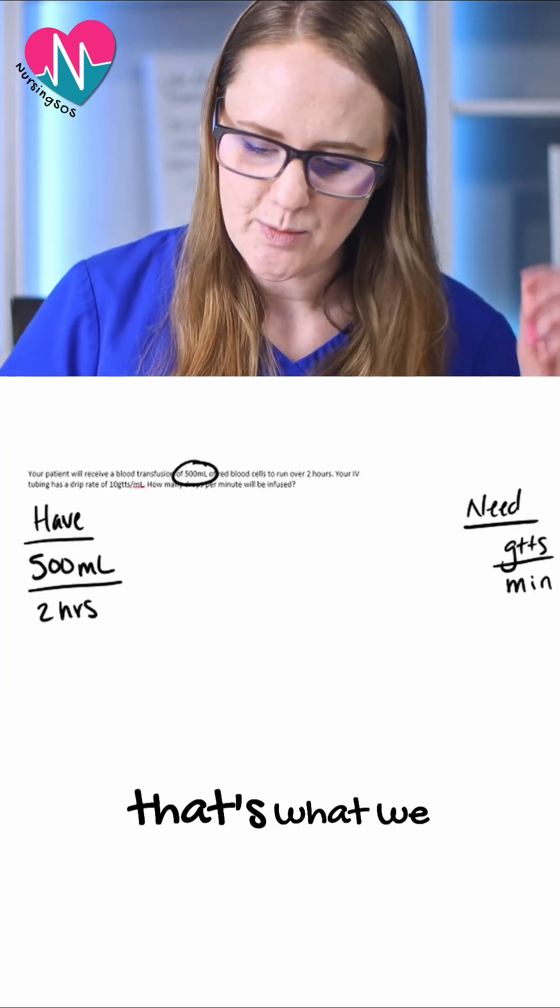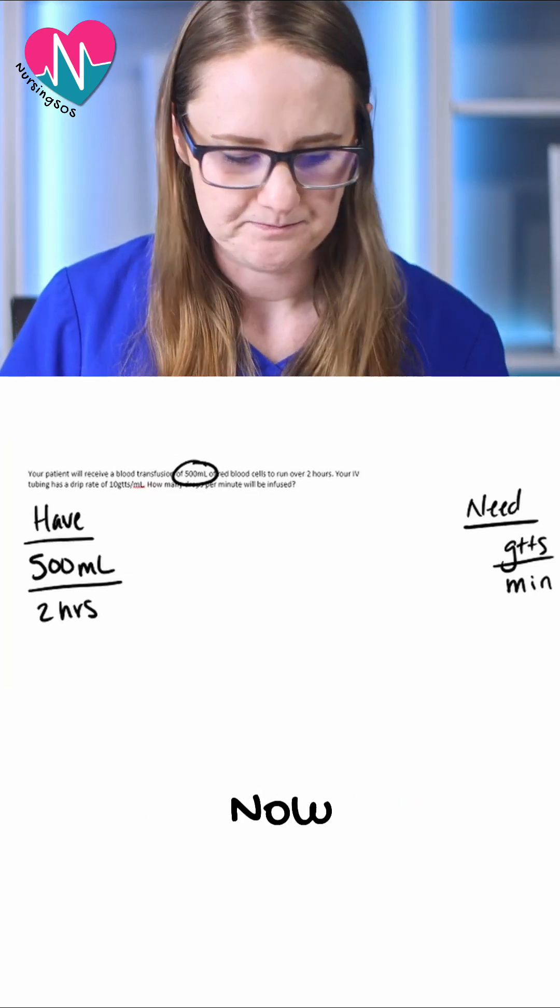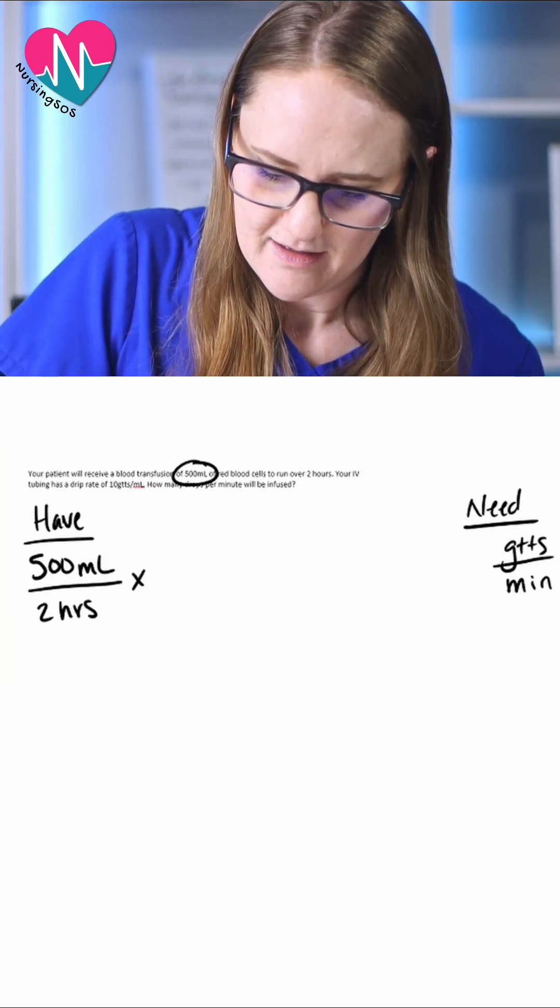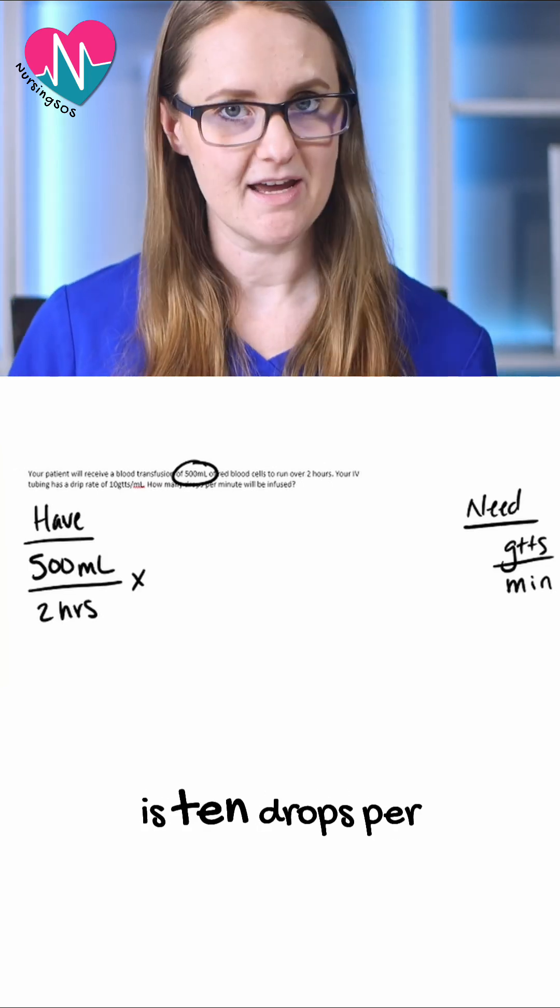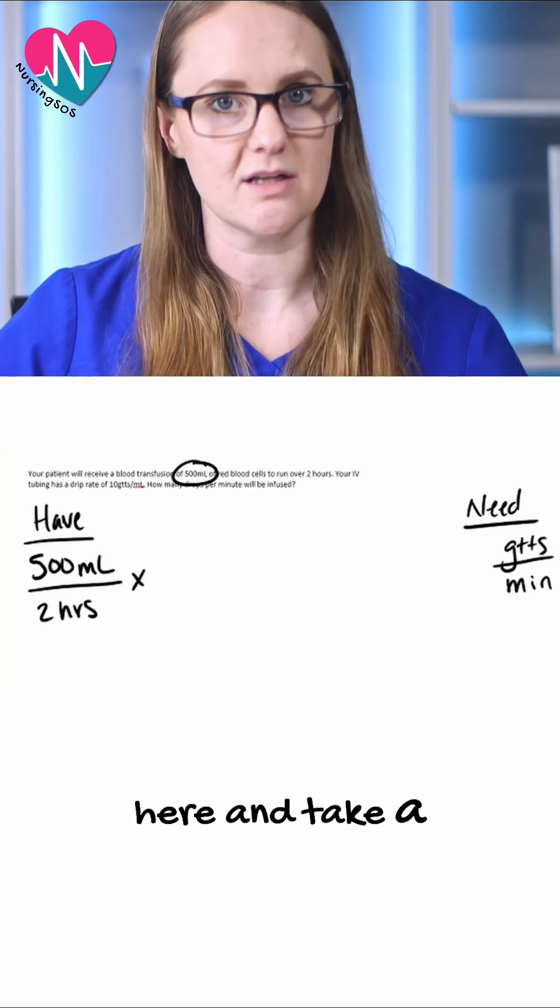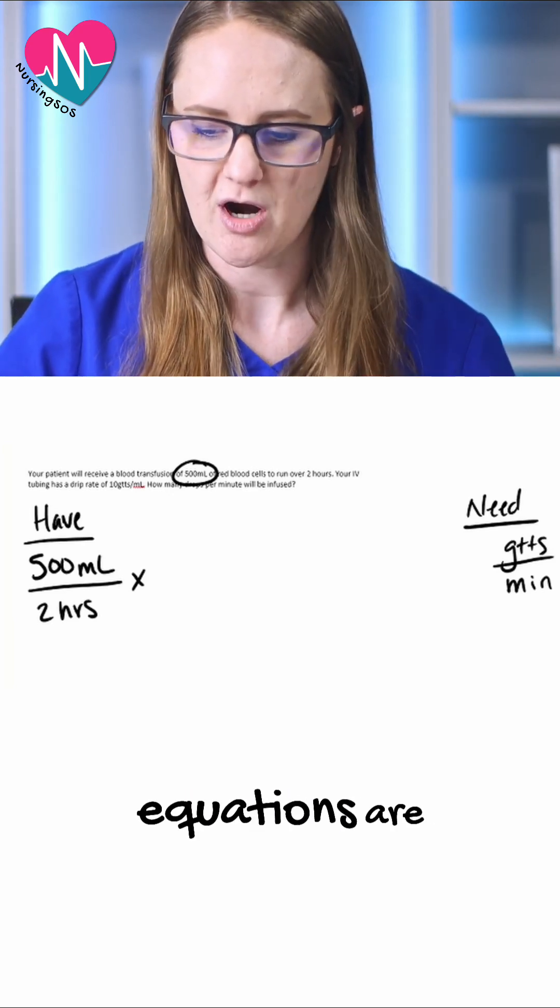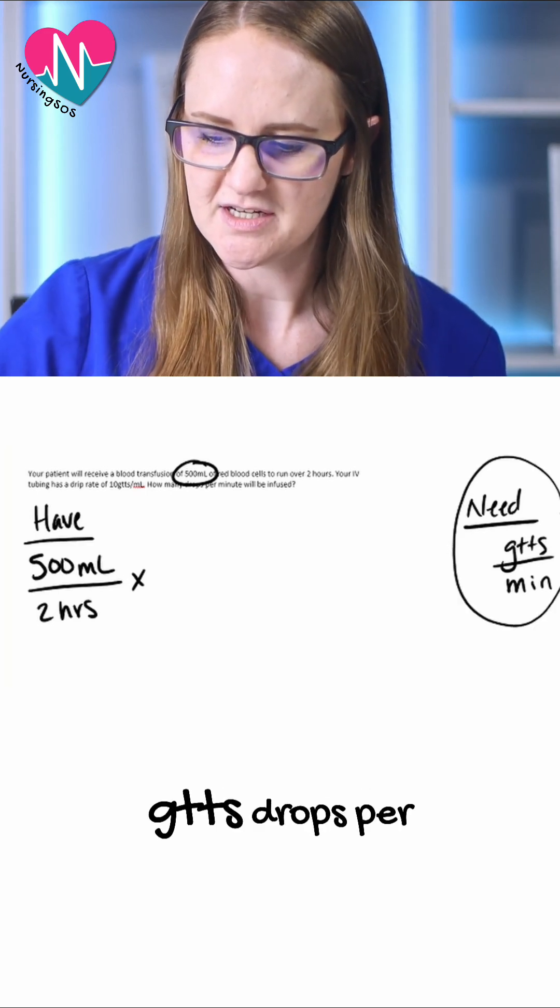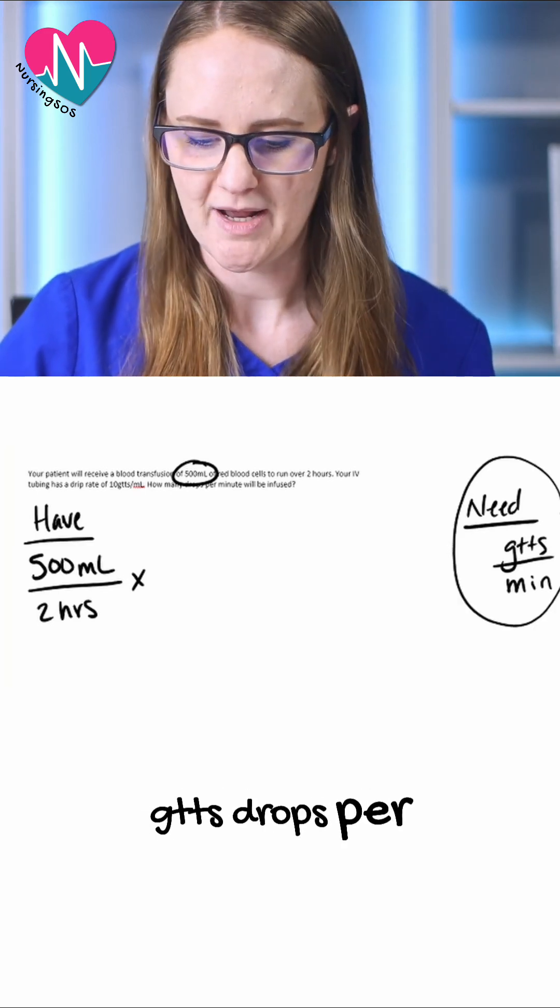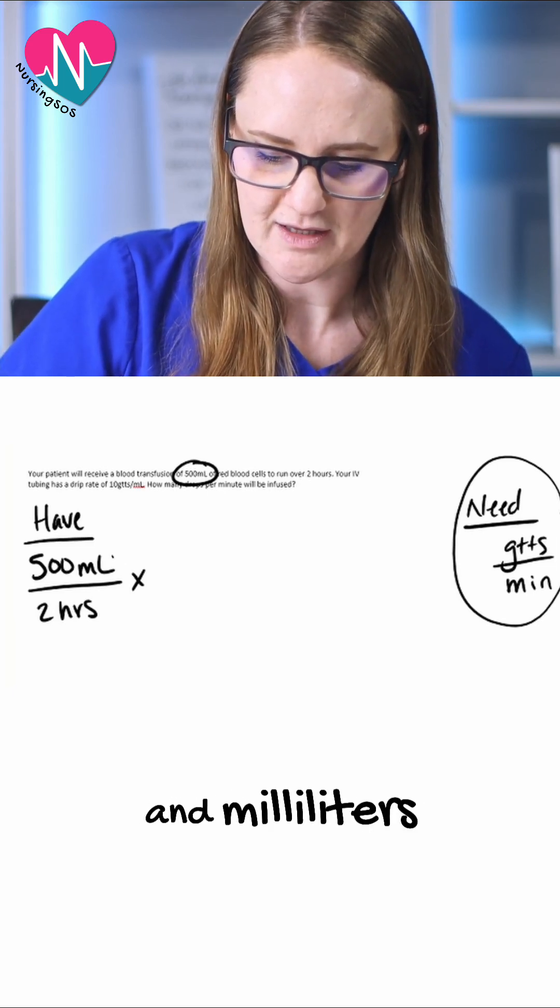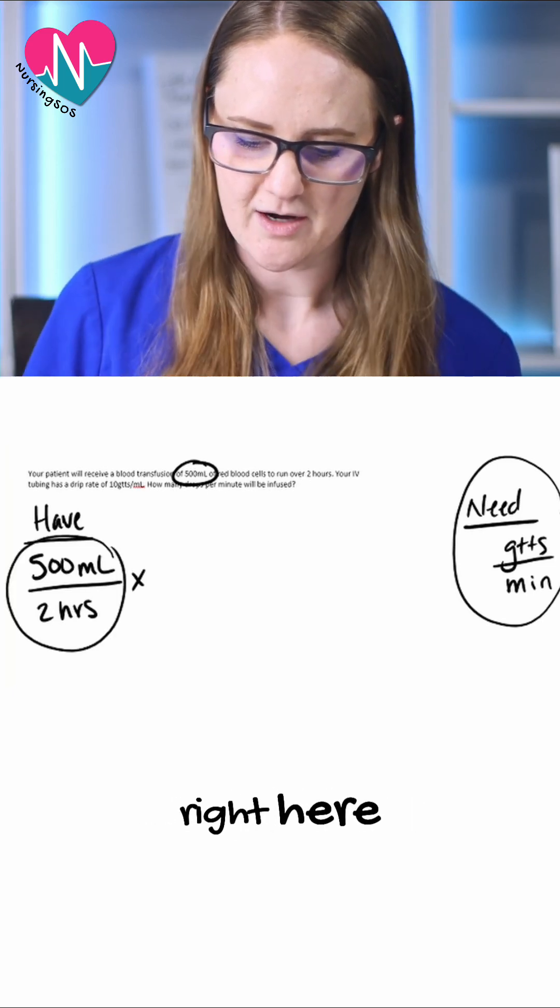That's what's ordered, that's what we have. Now our IV tubing here is 10 drops per mL. Let's pause here and take a look at where our equations are. Here's what we need at the end: gtts drops per minute. Now here we have hours and milliliters right here.